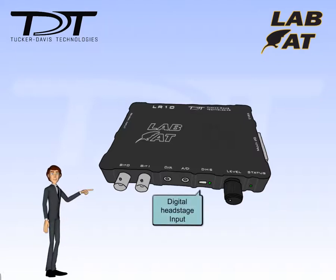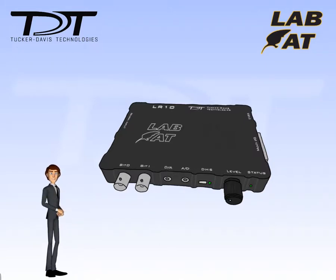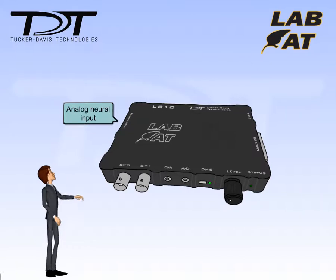This 12-pin Omnetics connector supports in-tan based digital head stages like TDT's ZD32 ZIF clip device. Finally, connect your analog neural signals to this DB26. This 16-channel input offers high fidelity recording for just about any neural signal.